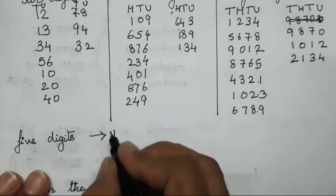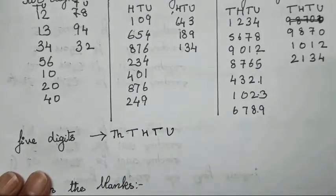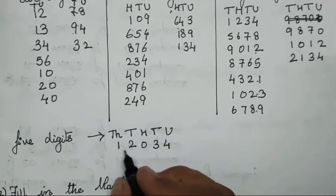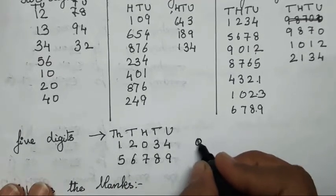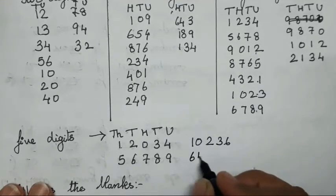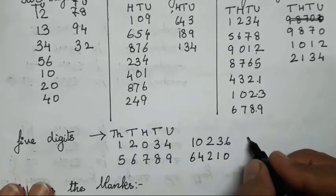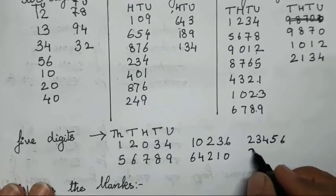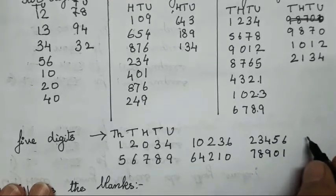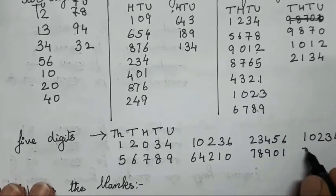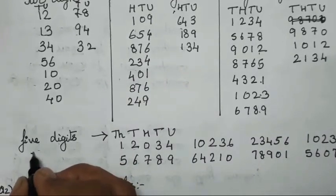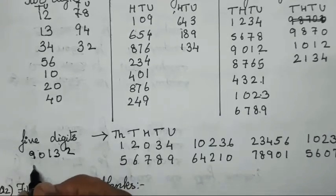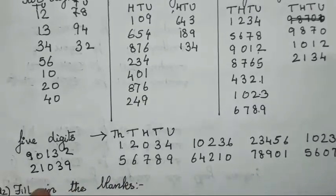Now for five digit numbers — ten thousand, thousand, hundred, tens and units. So I will write: 12003, 4567, 8910, 23666, 42102, 36678, 88990, 12345, 60782, 46890, 13229, 0132 — any numbers of your choice children, but it has to be five digits.